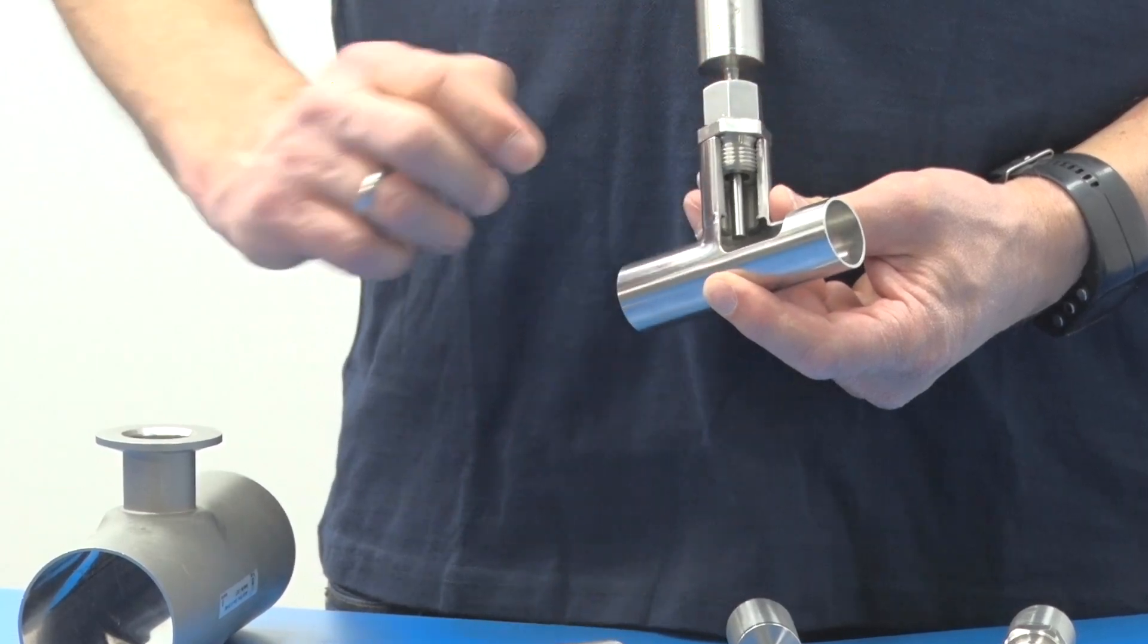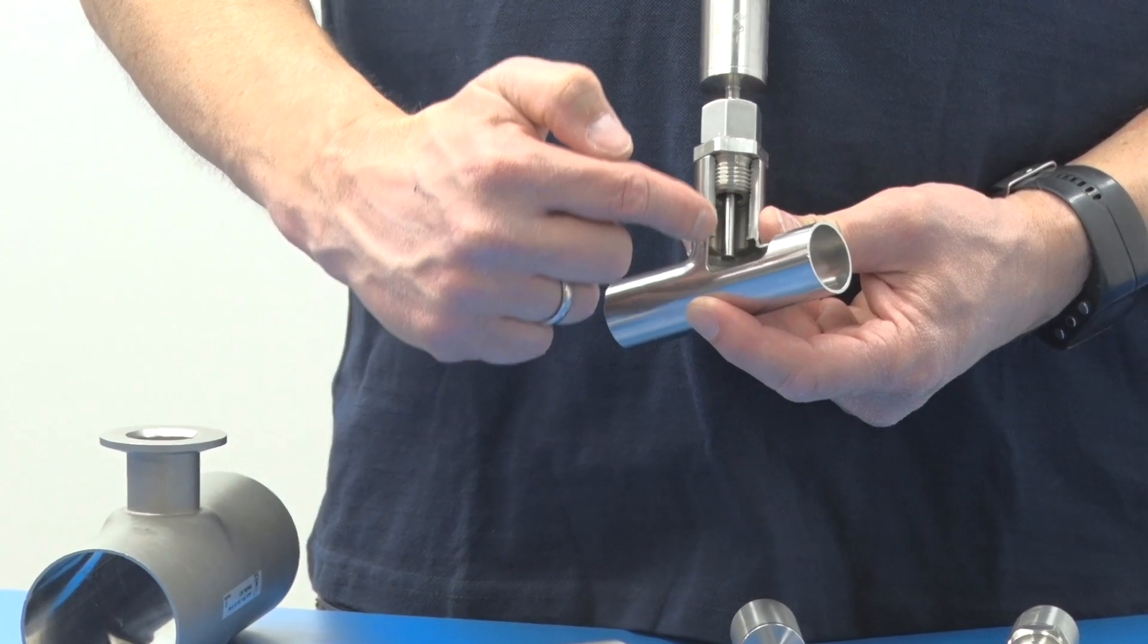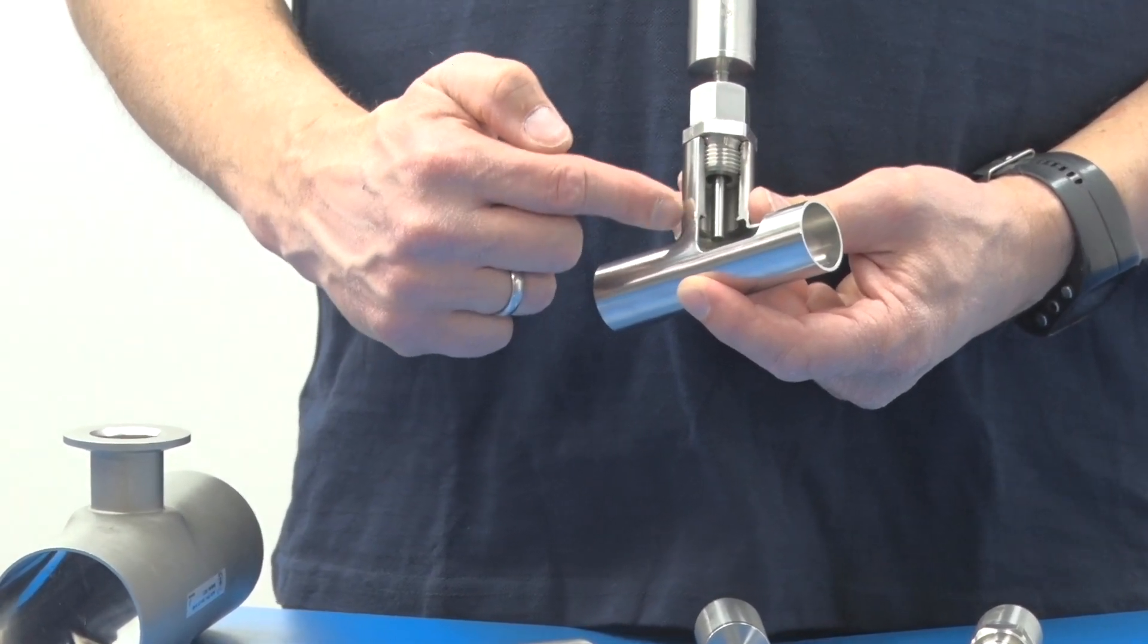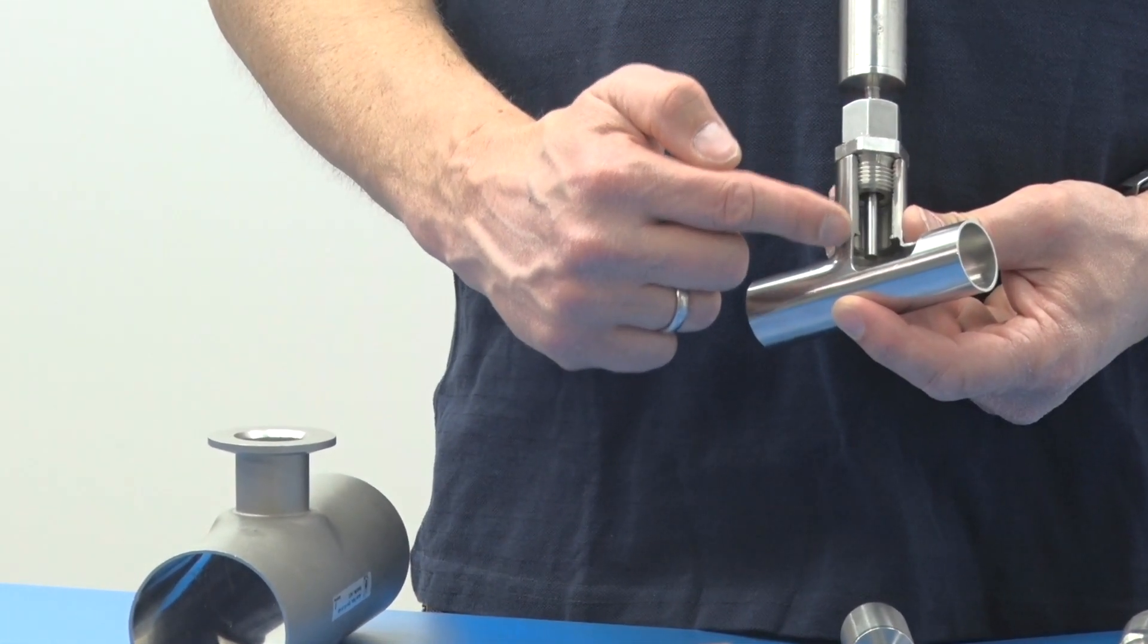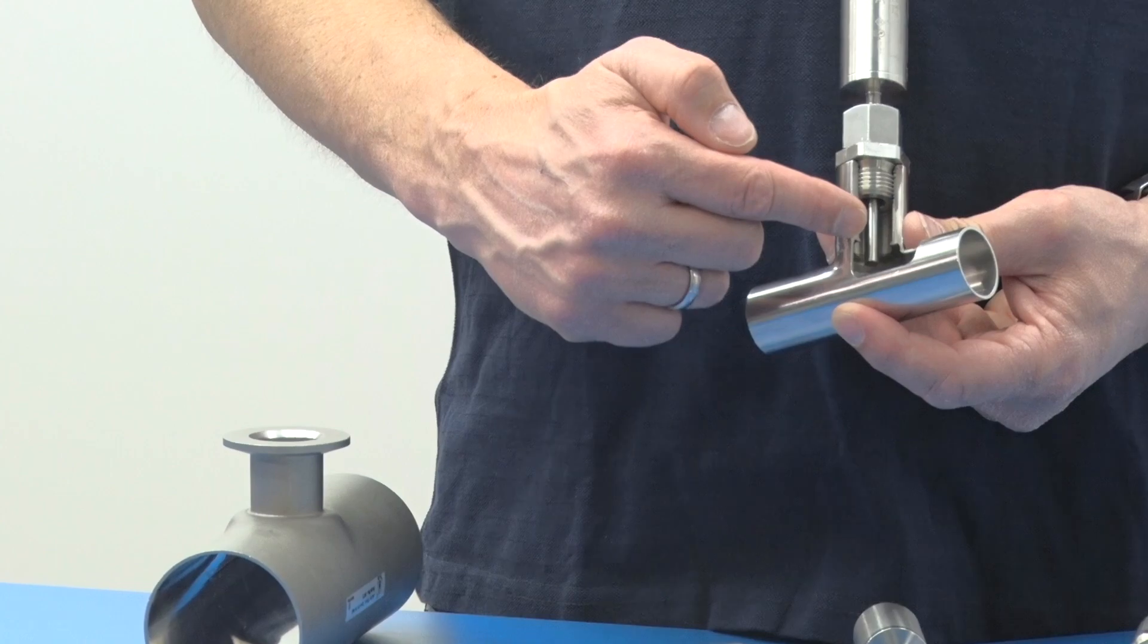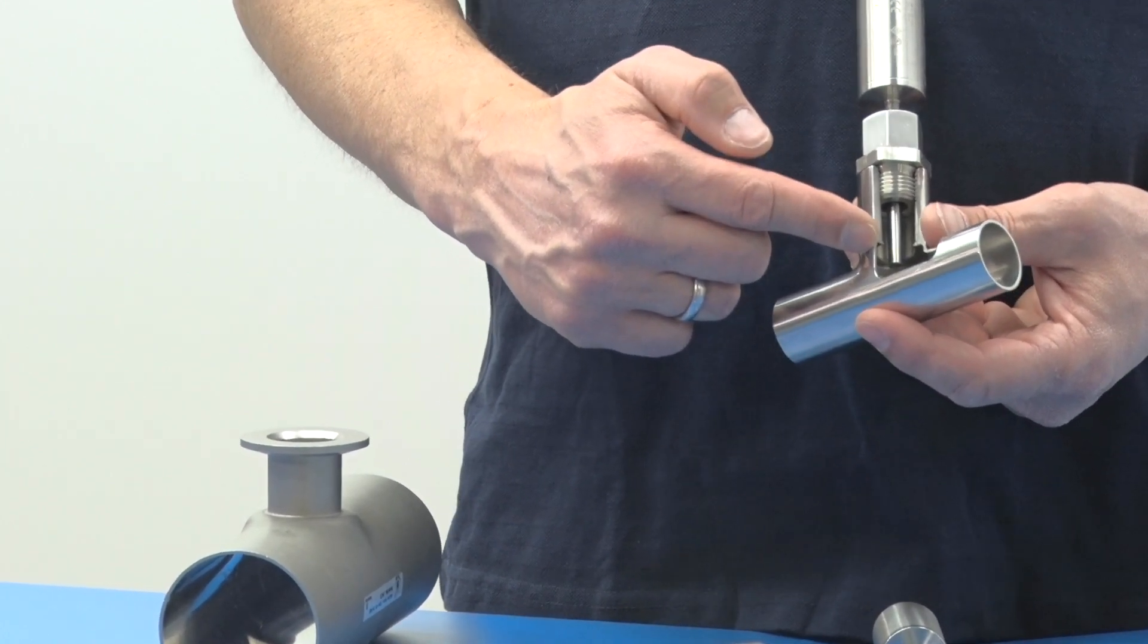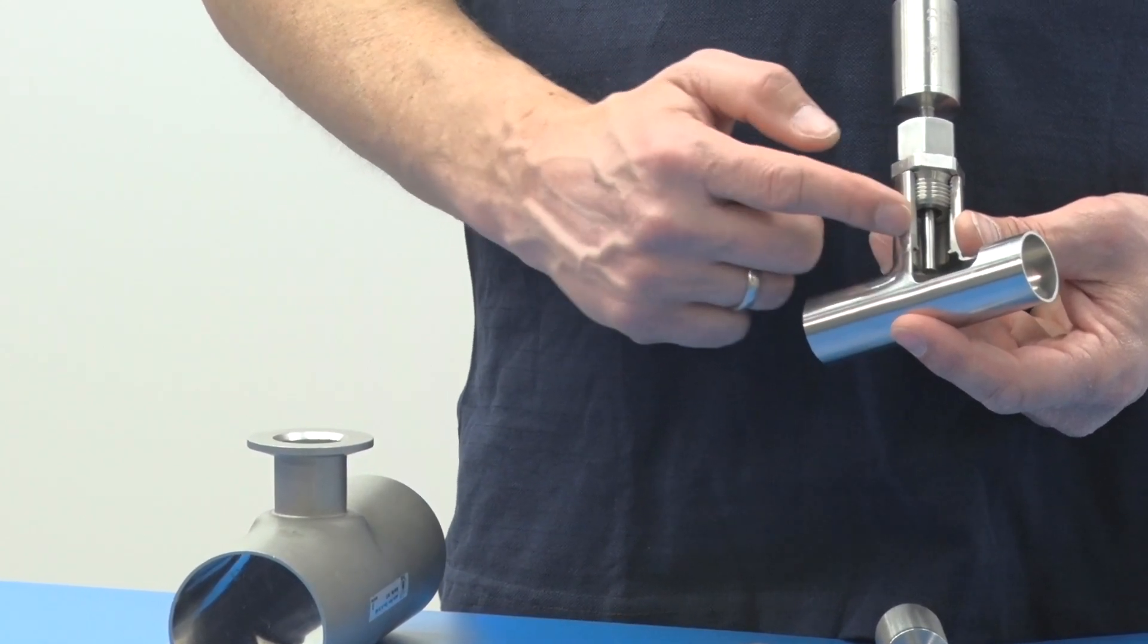In both connections, the correct sensor position in the pipe is ensured by mounting and rod length. Also in sensor exchange, for example maintenance, the sensor position remains unchanged. Installation is very easy without potential mounting errors.